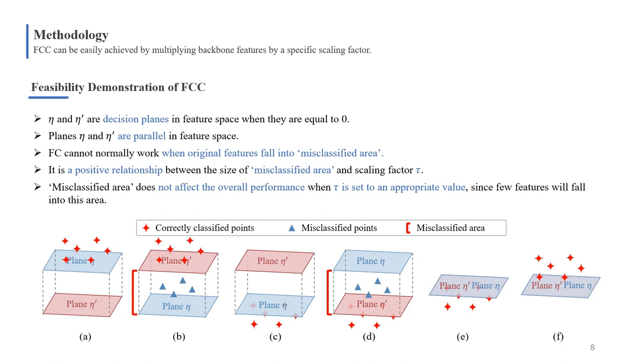After mathematical analysis, we find that η and η' are decision points in feature space when they are equal to zero, and they are parallel. In the space, there are six situations about these hyperplanes relative to features. The classifier cannot work only when original features fall into misclassified area.